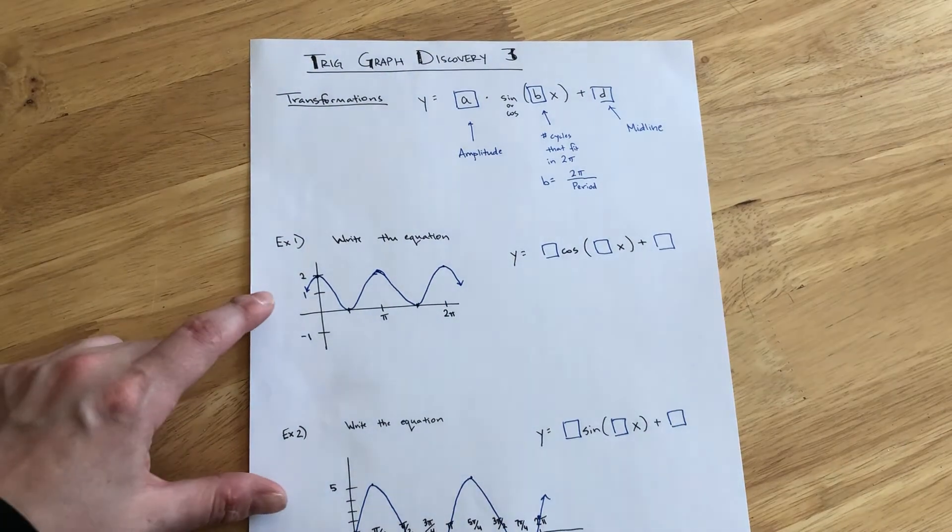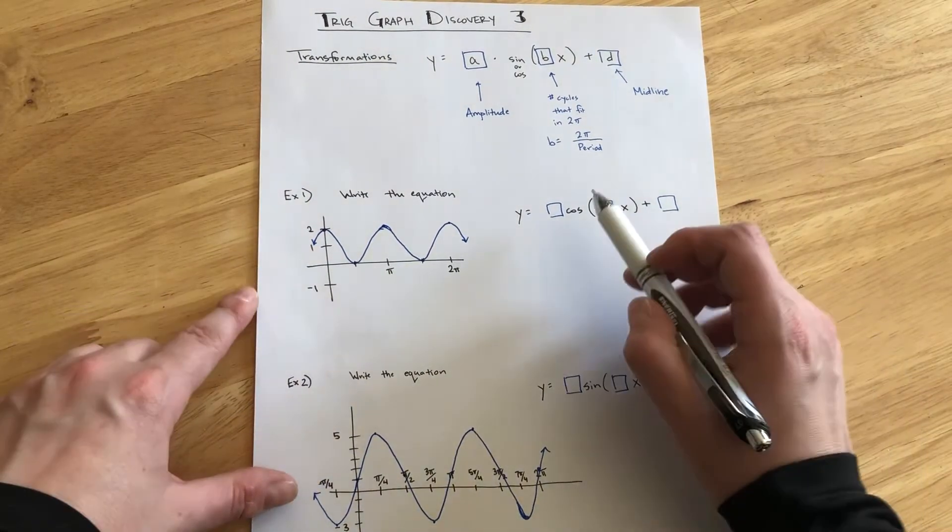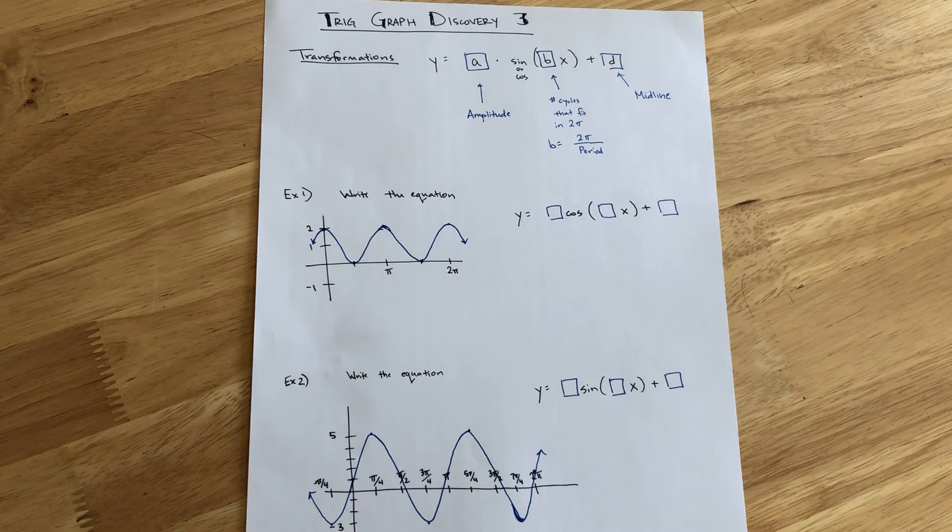Okay, so let's see what that means. So here in example 1, our job is to write the equation for this wave. And they've identified it as a cosine wave, so we don't have to decide.